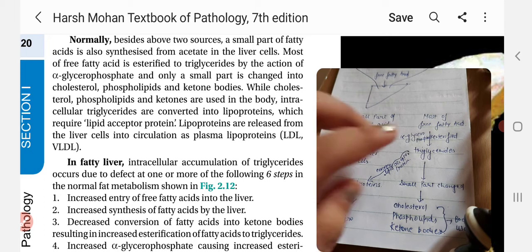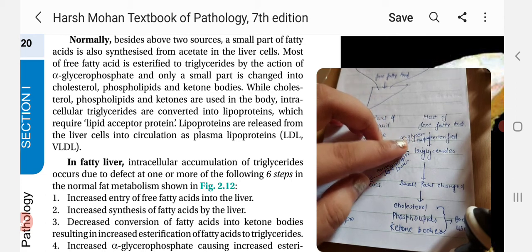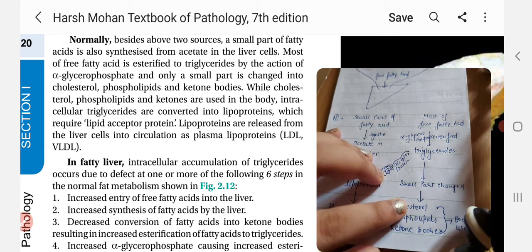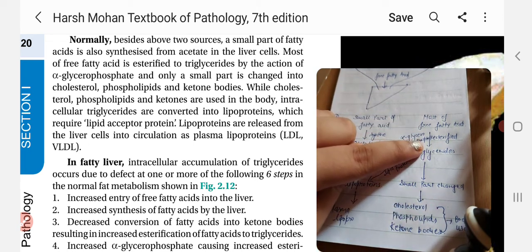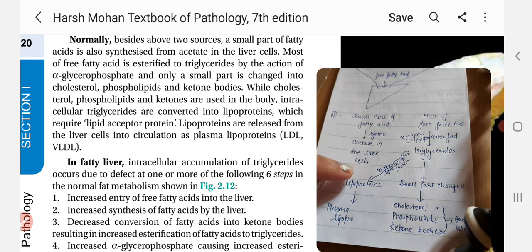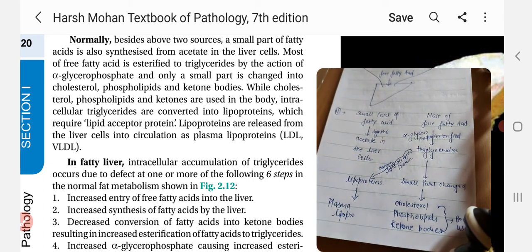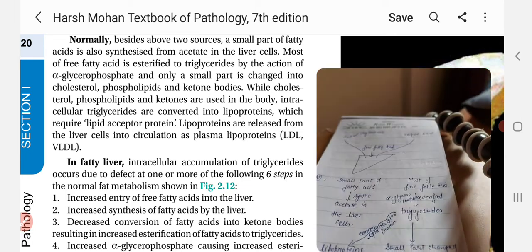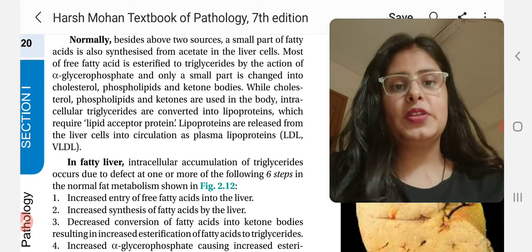Most of the free fatty acid is esterified to triglyceride by the action of alpha glycerophosphate, and only a small part is changed into cholesterol, phospholipids, and ketone bodies. While cholesterol, phospholipids, and ketone bodies are used in the body, intracellular triglycerides are converted into lipoproteins which require lipid acceptor protein. Lipoproteins are released from liver cells into circulation as plasma lipoproteins. These are the basic steps through which fat metabolism occurs.